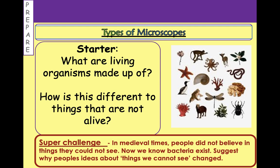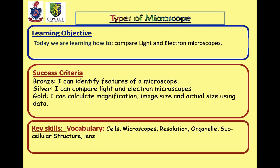Hopefully that got you all warmed up. Today we're going to learn how to compare light and electron microscopes. I need you to be able to identify the features of a microscope — we'll go through what the basic features are and what each part does. We're going to compare light microscopes to electron microscopes, and then use some numbers calculating magnification, image size, and actual size. If you don't have a calculator nearby, you might want to go grab one. The maths is very light — please don't let that put you off. Key vocabulary today includes: cells, microscopes, resolution, organelle, subcellular structure, and lens.